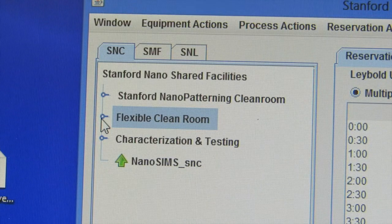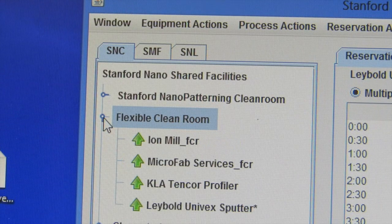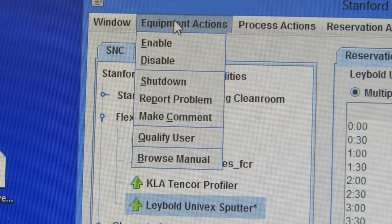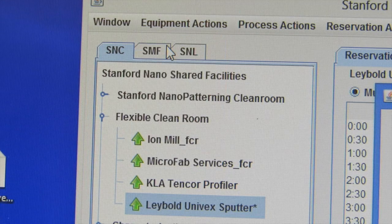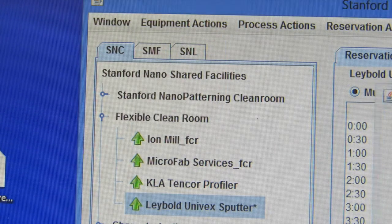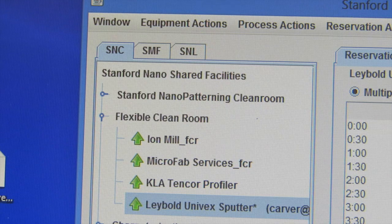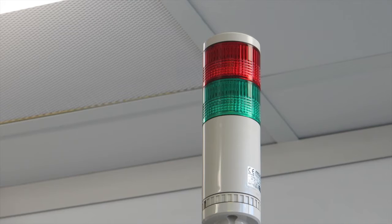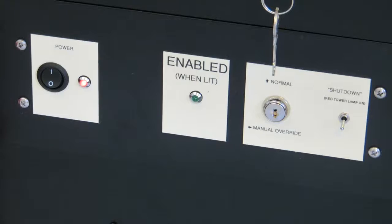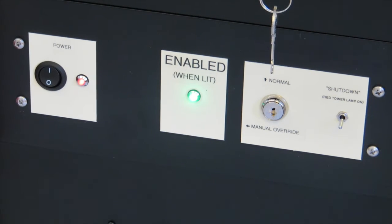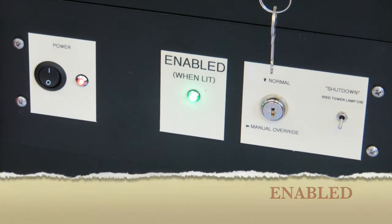Before you can open the chamber you need to go on Badger, go to the flexible clean room, click on Leybold Univex sputter, on equipment actions, hit enable and say OK. Once it's enabled the tower light will turn green. Also this panel down lower on the machine will also turn green once it's enabled.